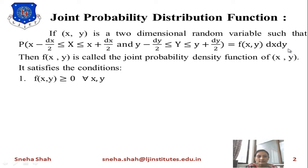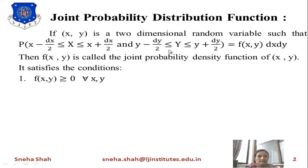If it satisfies the following conditions, then and only then will it be considered a joint probability distribution function. The first condition is that f(x, y) should be greater than or equal to 0 for every x and y. This means f(x, y) is basically considered as the probability of x and y, and probability can never be negative.